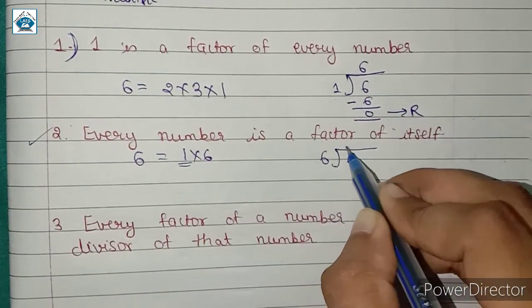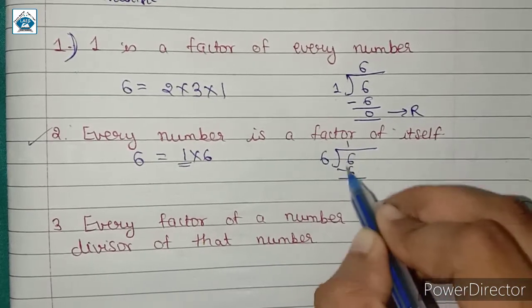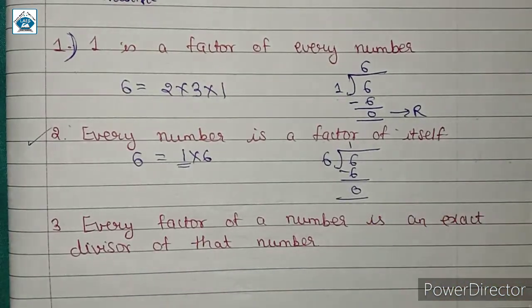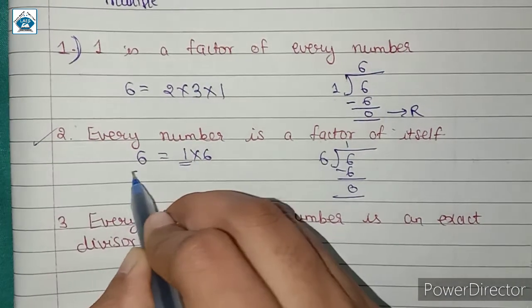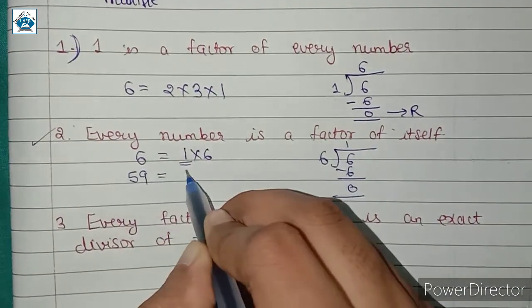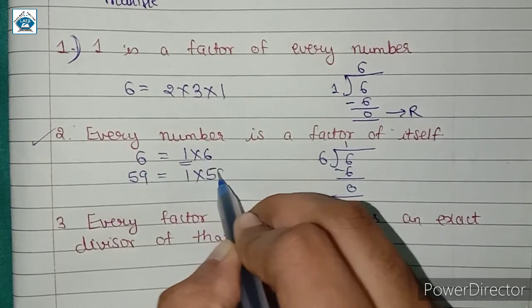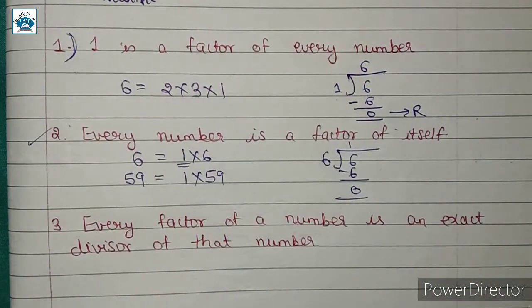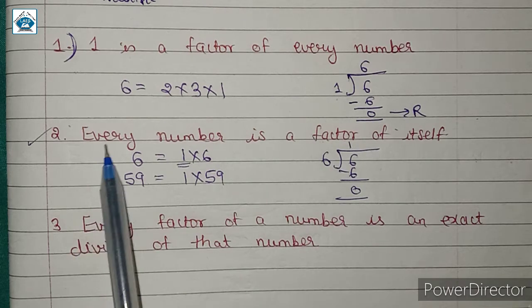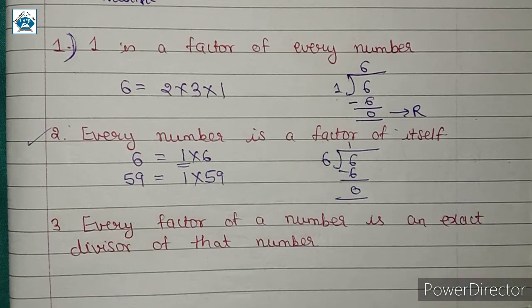You can consider this for any number. For example, 59 can be written as 1 multiplied by 59 or 59 multiplied by 1 — either way it is correct. So every number is a factor of itself, and 1 is a factor of every number. Therefore, every number has at least two factors: 1 and the number itself.